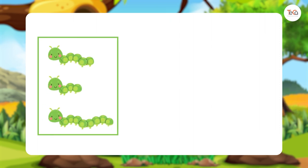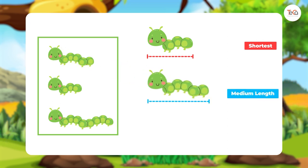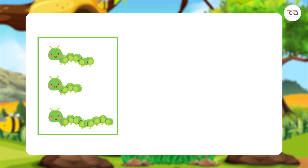Here we have three caterpillars. We can put them in order from shortest to longest, just like this. This is the shortest one — put it first. This one is medium length — put it second. This is the longest one — put it last.